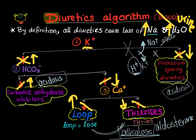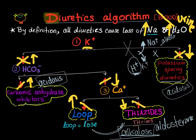If the potassium is low in the urine, it means it's high in the blood. Low potassium in the urine means we are using potassium-sparing diuretics, such as spironolactone.